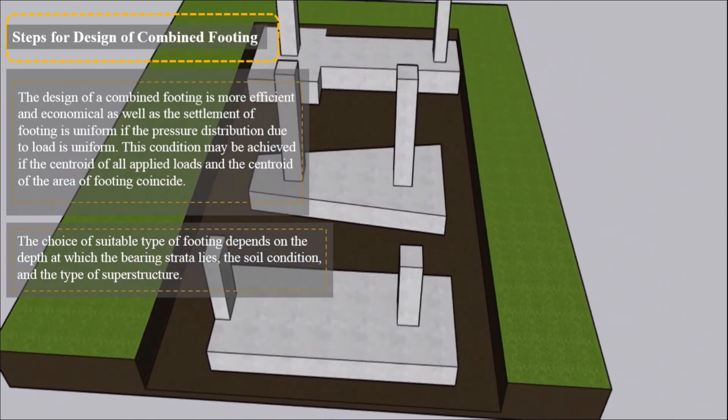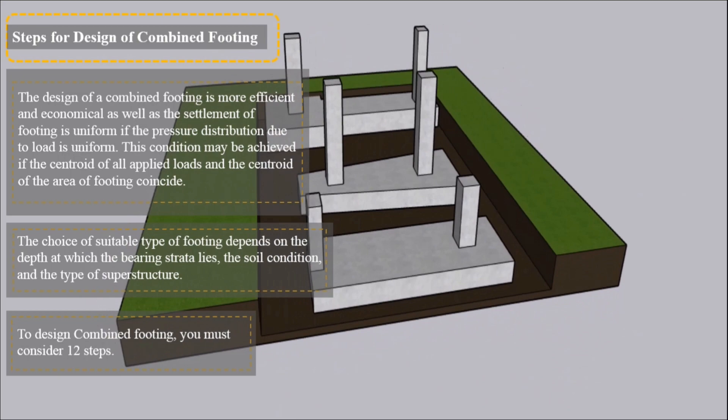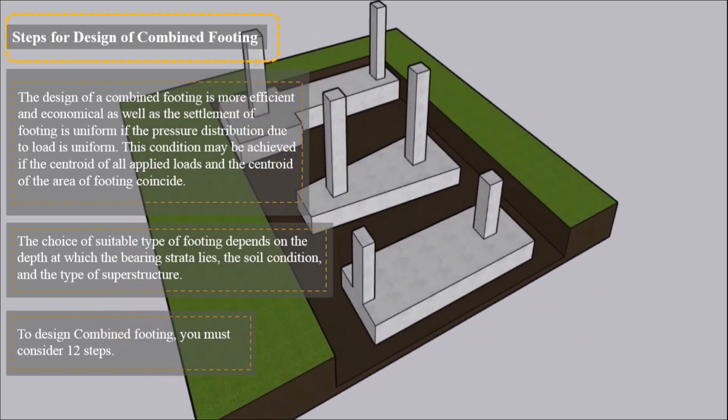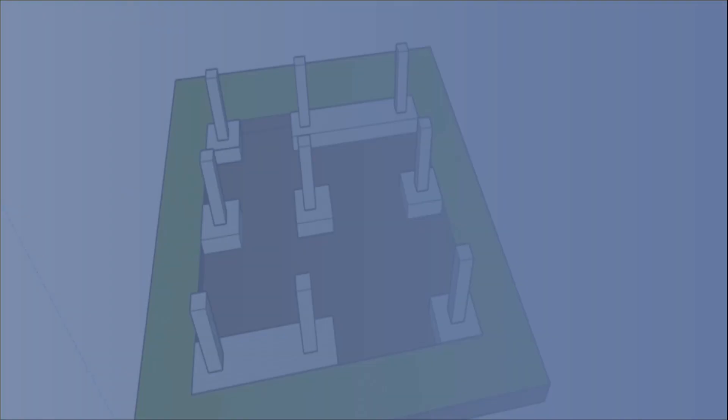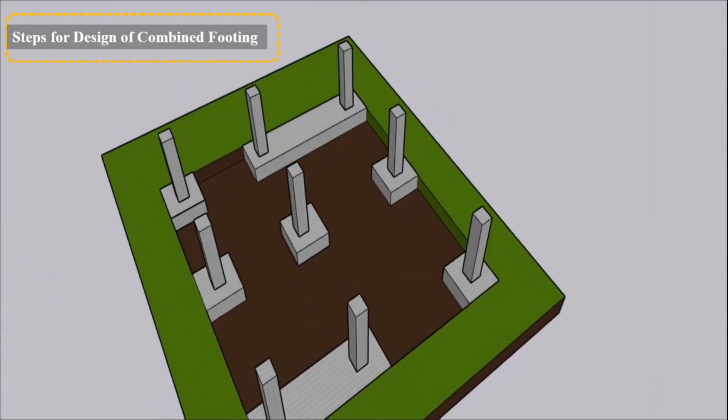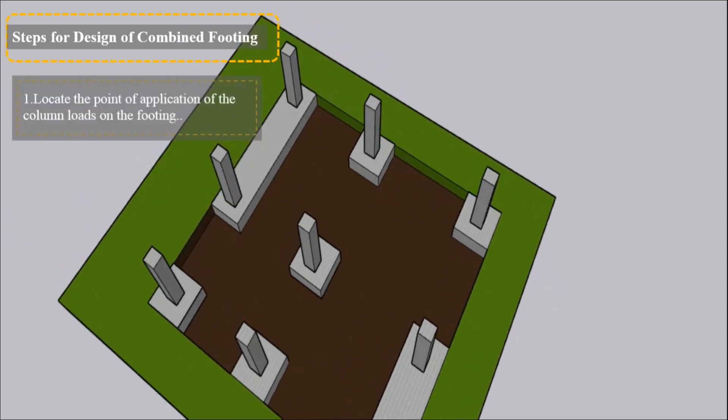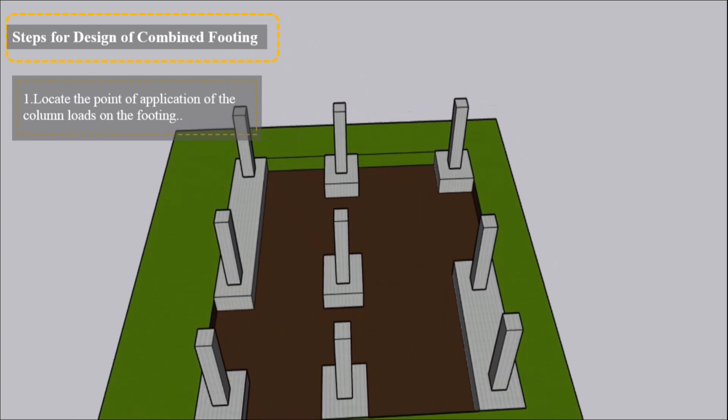To design combined footing, you must consider 12 steps. 1. Locate the point of application of the column loads on the footing.